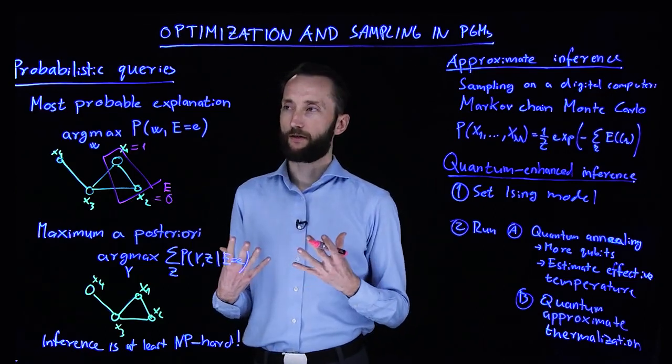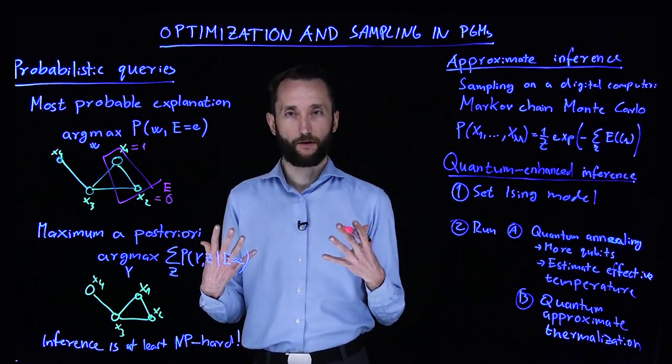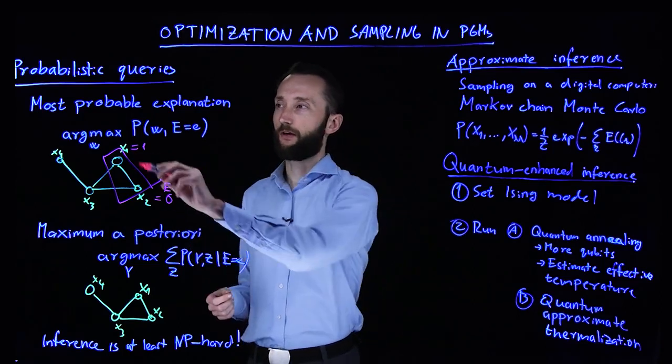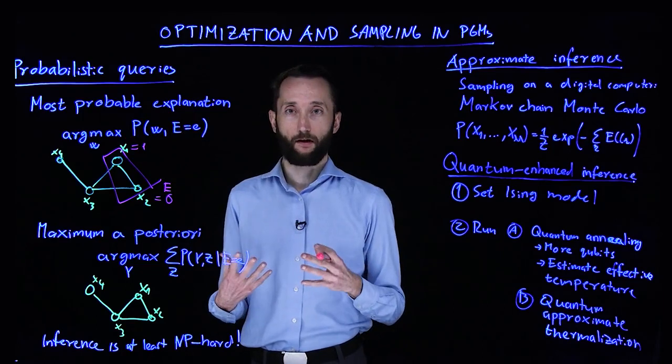And then the question you are asking is that given this evidence, what's the most likely configuration for the rest of the network? So you are looking for the argmax of the remaining variables in the graph.